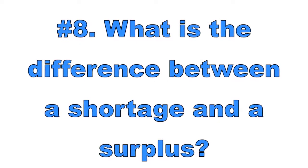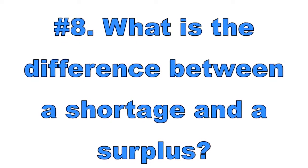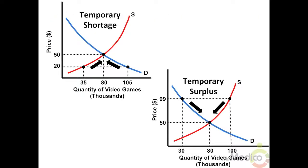Number eight: What is the difference between a shortage and a surplus? A shortage occurs in a market when the quantity demanded exceeds the quantity supplied. Assuming no price controls or natural disasters, a shortage is only temporary and market forces will push prices back up toward equilibrium. If the government establishes an effective price ceiling — a legal maximum price below the market price — the shortage becomes long term.